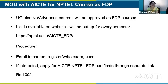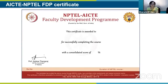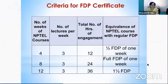This is what the FDP certificate looks like — it has the AICTE director's signature, AICTE logos, and the regulation under which it was approved. You can present it in promotion interviews. The equivalence is: a four-week NPTEL course equals half an FDP week; an eight-week course equals one full FDP week; and a twelve-week course equals one and a half FDP weeks.